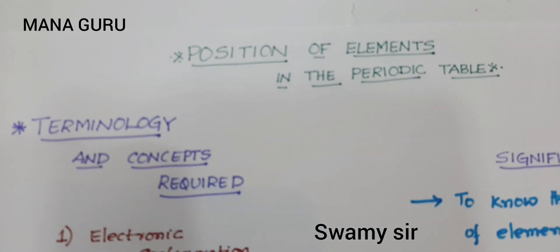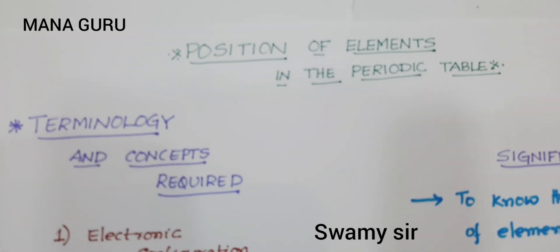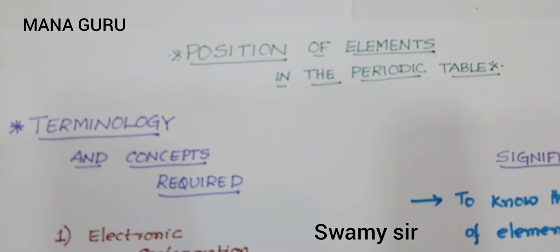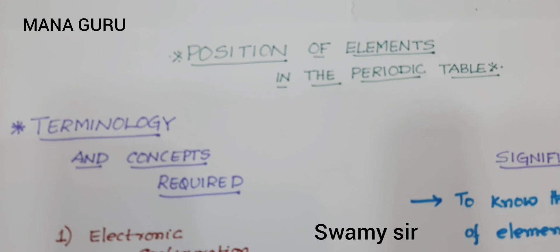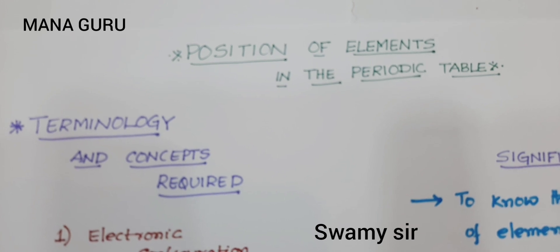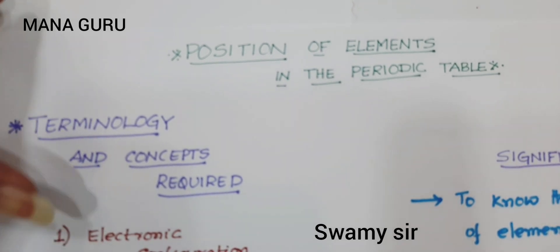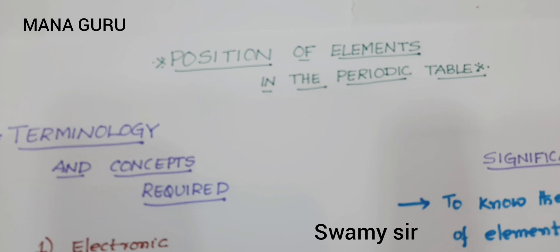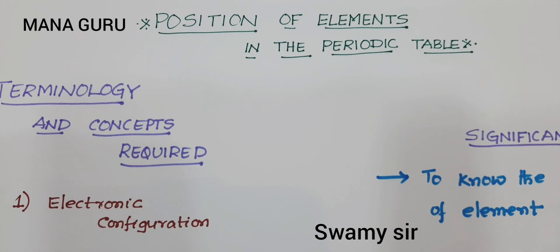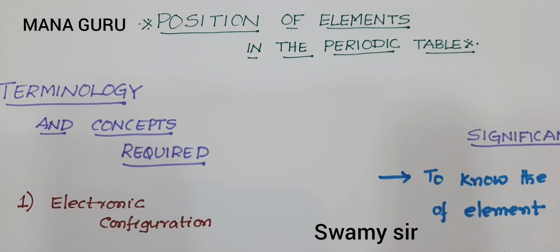How to find the position of an element in the periodic table? Hello students. I am coming back to explain how to find the position of an element in the periodic table. Generally, we have nearly 118 elements, but every time it is a headache to find its position exactly in the periodic table. So, to know the tricks to find their position in the periodic table.